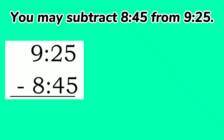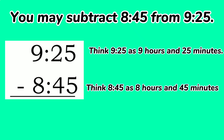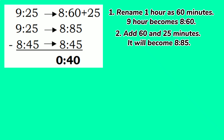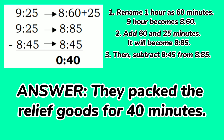You may subtract 8:45 from 9:25. Think 9:25 as 9 hours and 25 minutes, and 8:45 as 8 hours and 45 minutes. Since regrouping is needed, follow these steps. First, rename 1 hour as 60 minutes — 9 hours becomes 8 hours and 60 minutes. Second, add 60 and 25 minutes to get 8:85. Third, subtract 8:45 from 8:85. The answer: they packed the relief goods for 40 minutes.